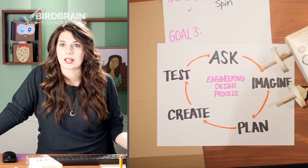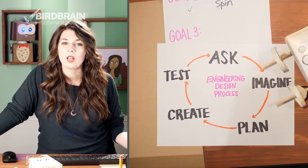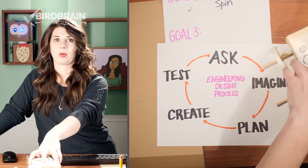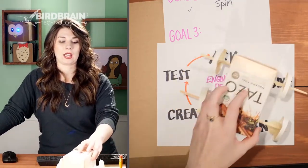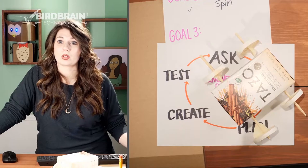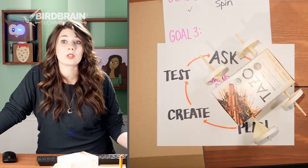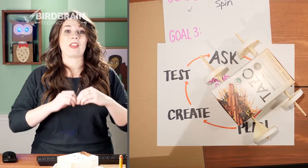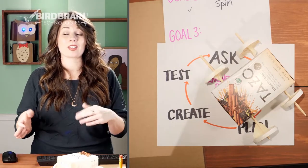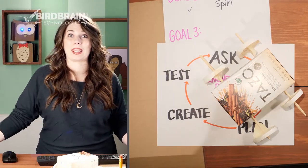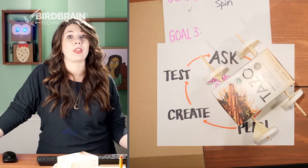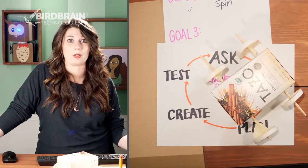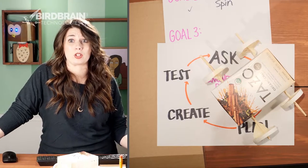Leslie had a cool idea in the comments: put two straws through the rover, add balloons on the ends, blow up the balloons, then let the air out and it would go faster and farther — making a balloon-powered car. That would be pretty great. If you have balloons, you should do that and show me!